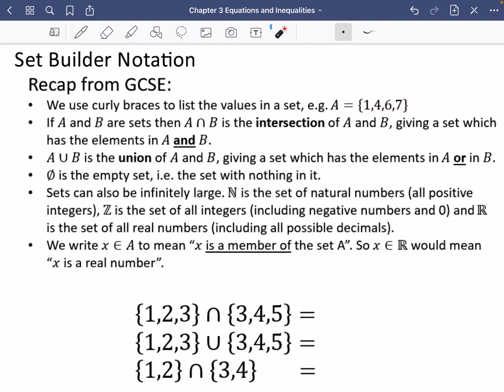If A and B are two sets, then A intersect B is the intersection of A and B, giving a set which has the elements that are in A and B at the same time.